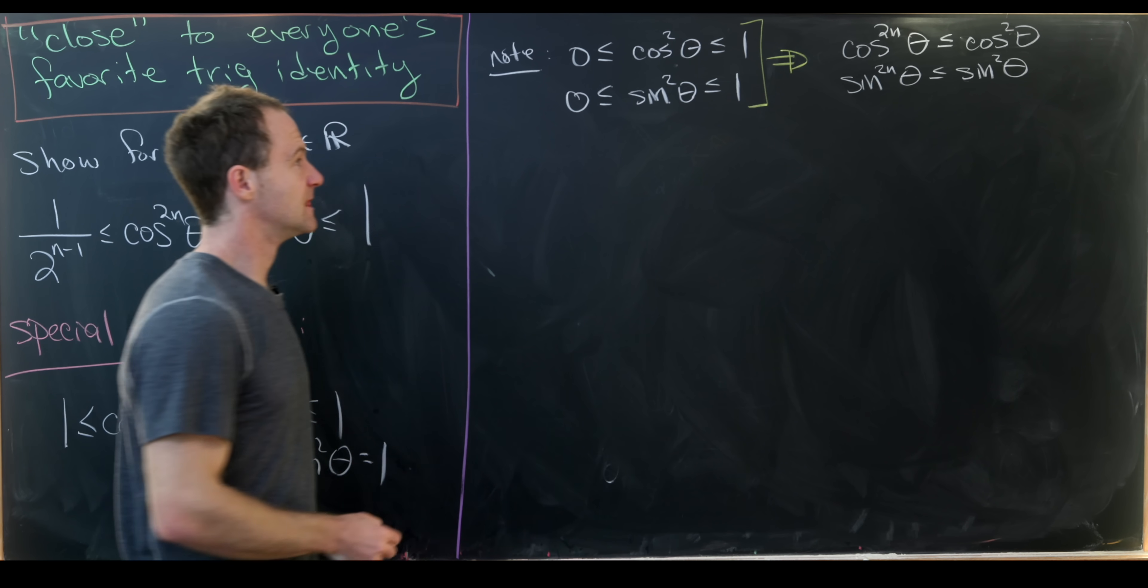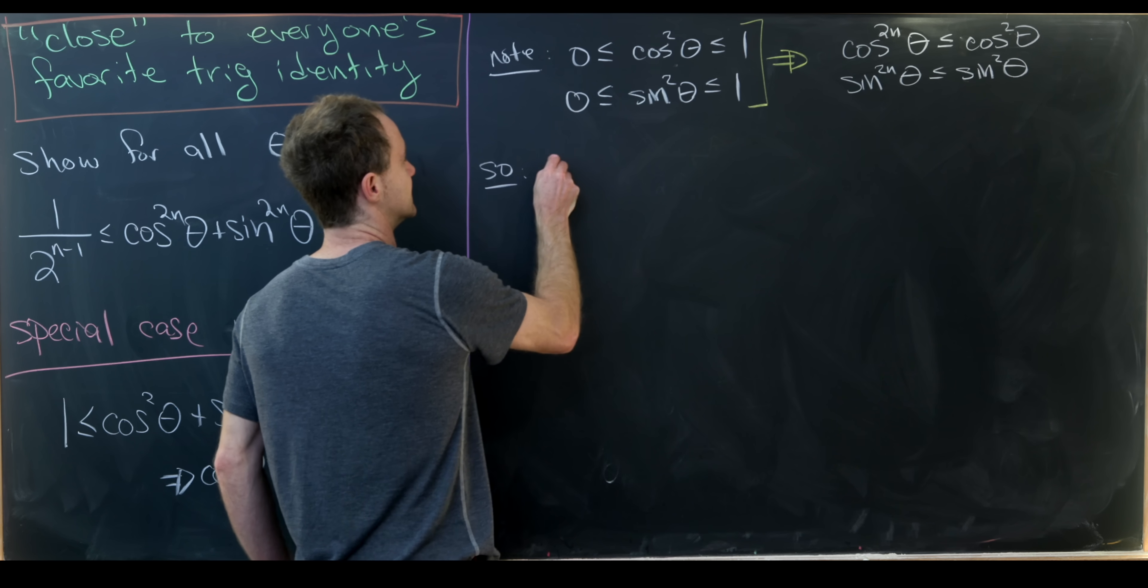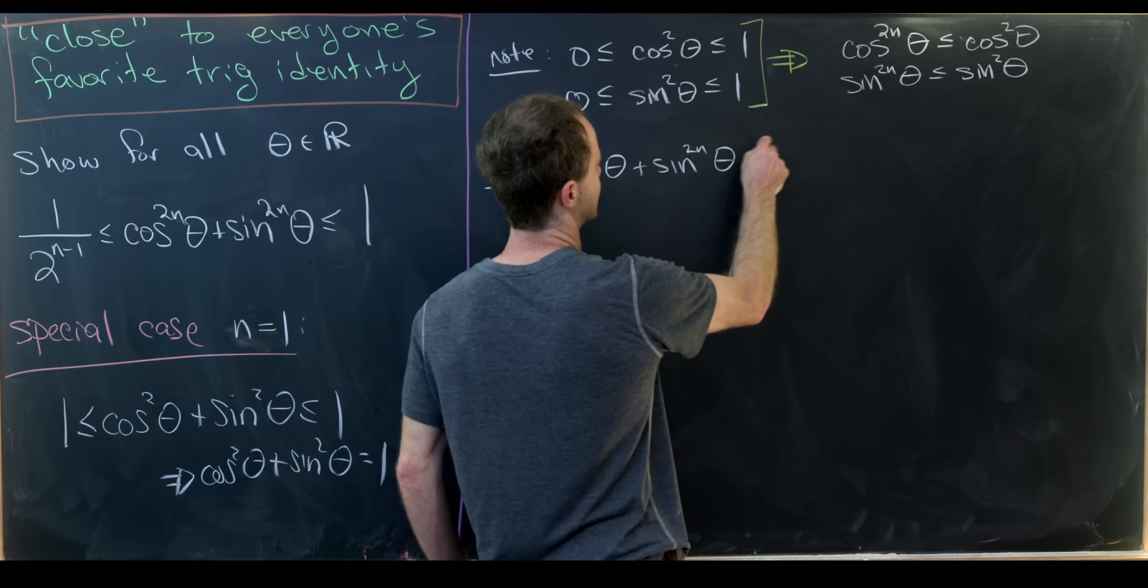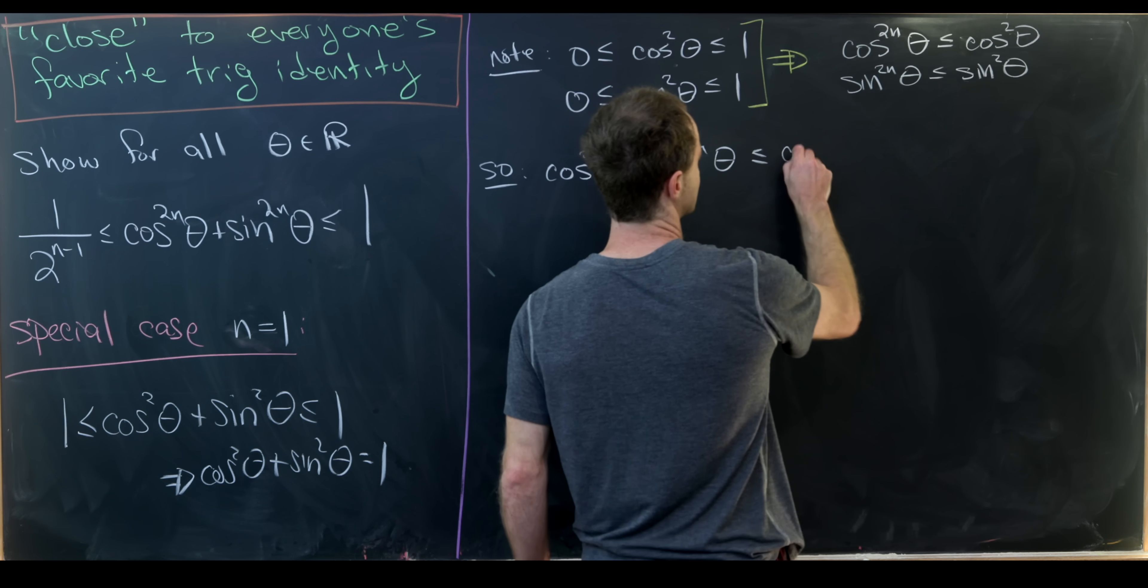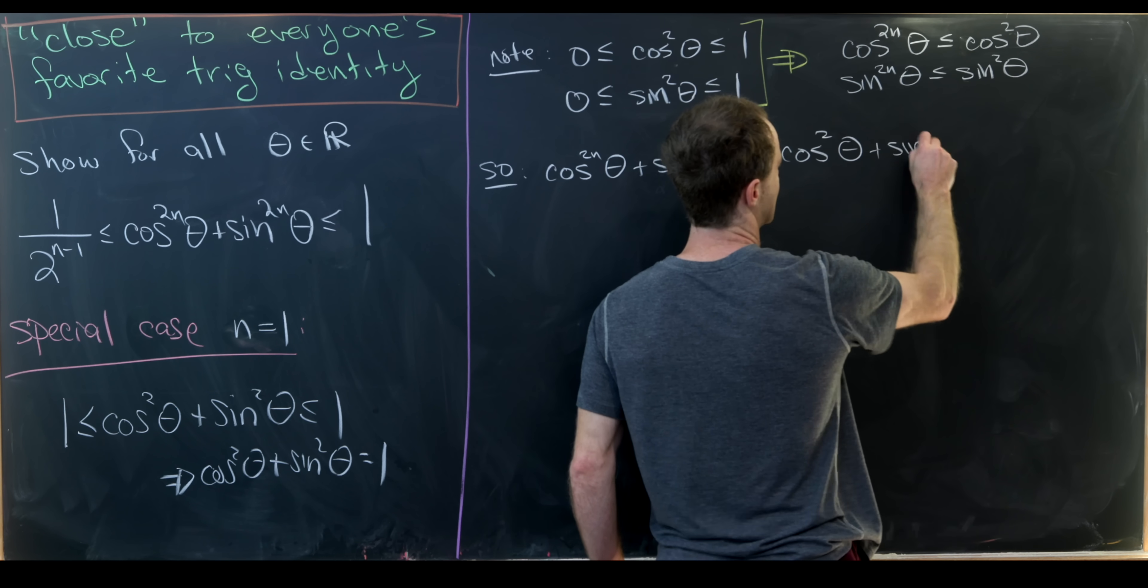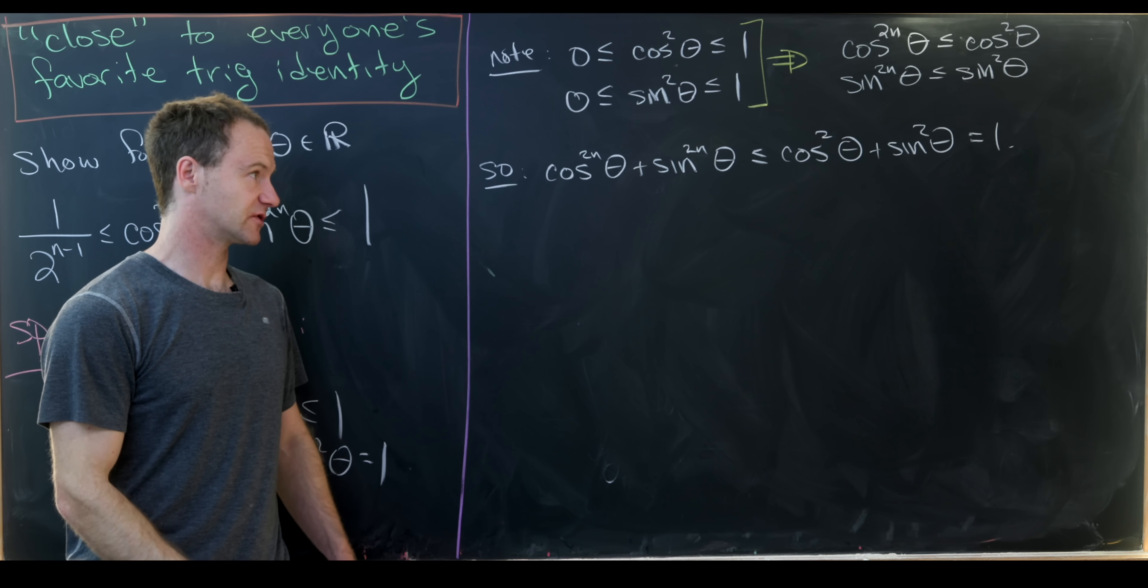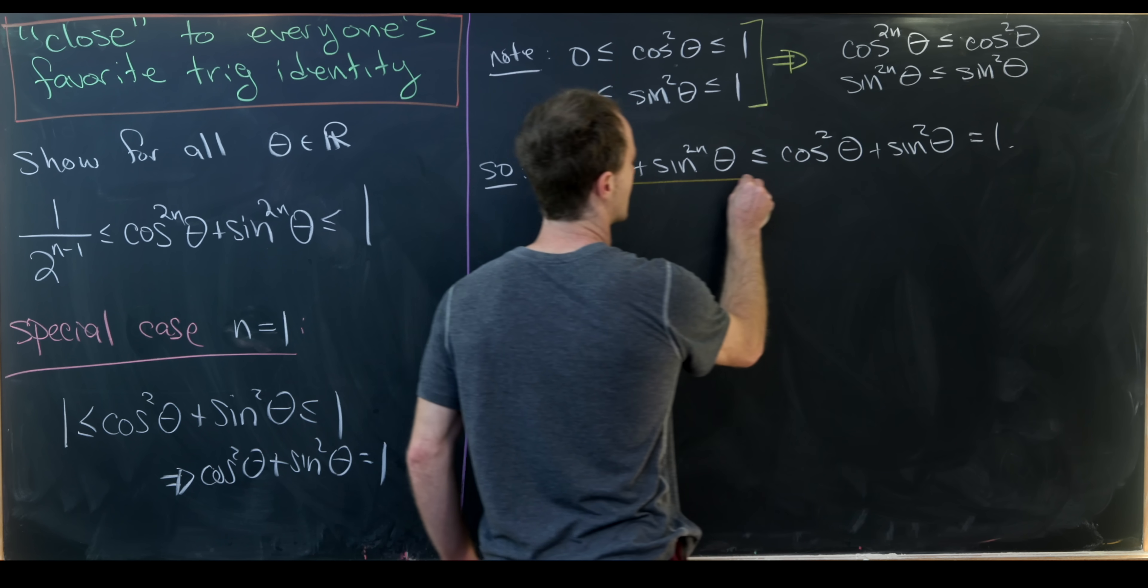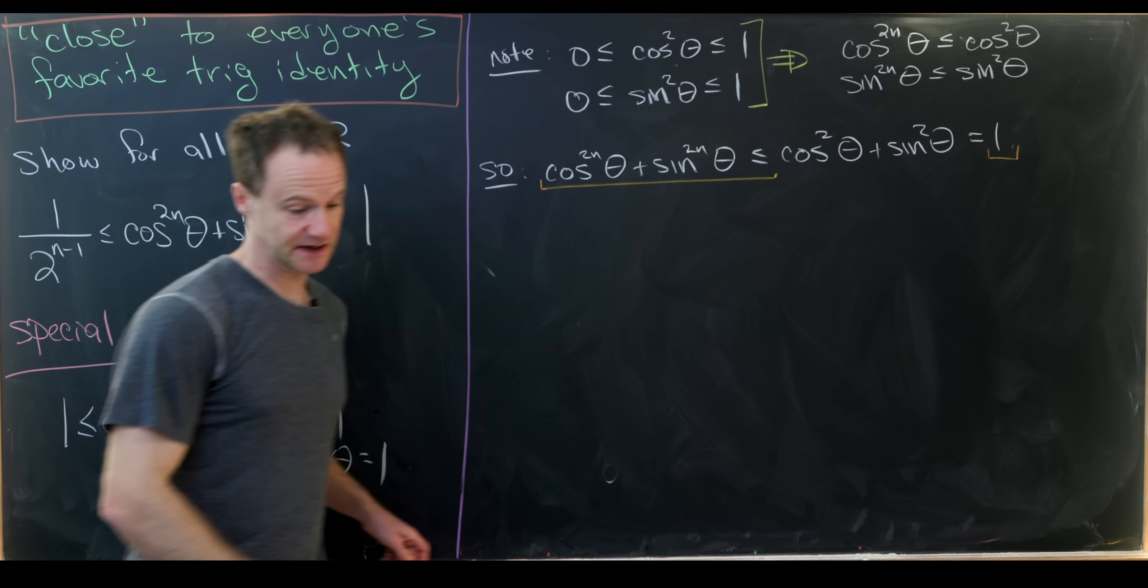Okay, nice. But now we can take our kind of goal expression. So that is cosine to the 2n theta plus sine to the 2n theta. Combine these two inequalities together, and we see that that is less than or equal to cosine squared theta plus sine squared theta, which is itself equal to 1 by the Pythagorean trig identity. So looking at this stuff that I'm underlining in orange, you'll see that we have most definitely achieved the right-hand portion of this inequality.